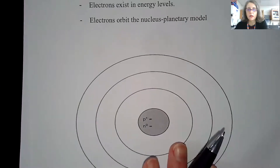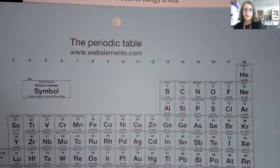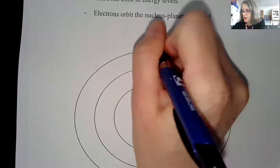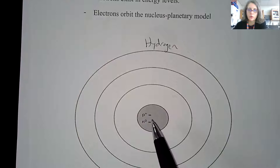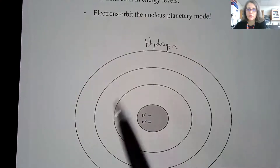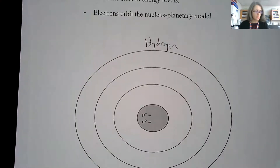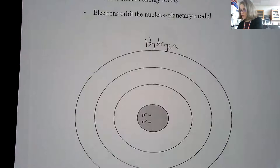I'm going to show you a couple of examples of different elements in the Bohr model. You'll need a periodic table. What you want to do is draw a center circle with protons and neutrons and then do some circles outside of that. These circles are going to represent what we call the energy levels around the atom.